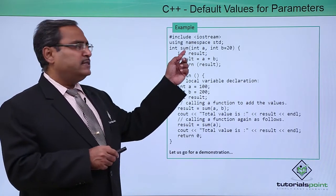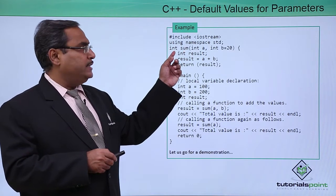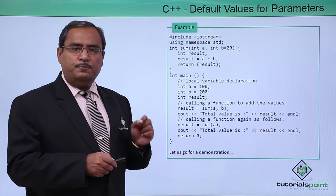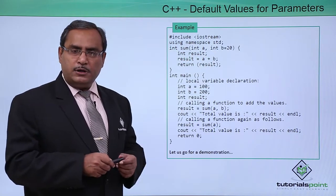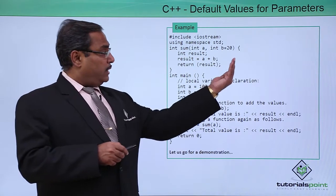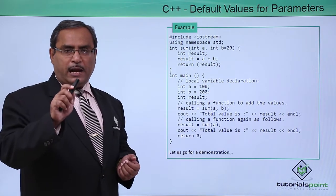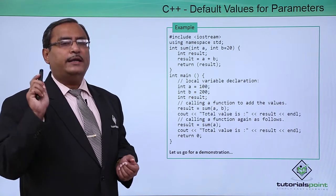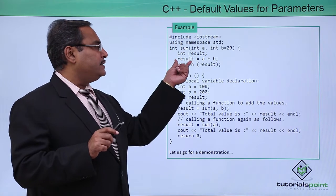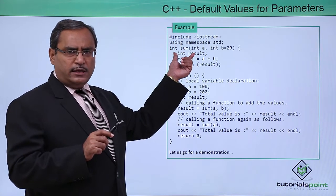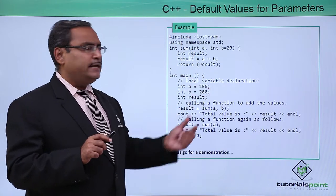Here there is a function named 'sum' which returns one integer. It has two input parameters: parameter number 1 is A and parameter number 2 is B. From the last, only B has a default value of 20. We are doing A plus B, the result is obtained as a local variable within the function sum, and the result is returned.